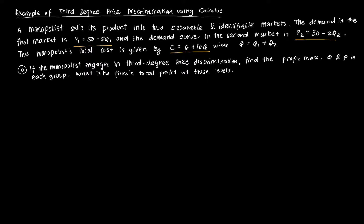We're going to be faced with a series of chained questions, so we'll answer them one by one. The first question is: if the monopolist can engage in third degree price discrimination, find the profit-maximizing price and output level for each market. Then we'll determine the total profit at that profit-maximizing combination.